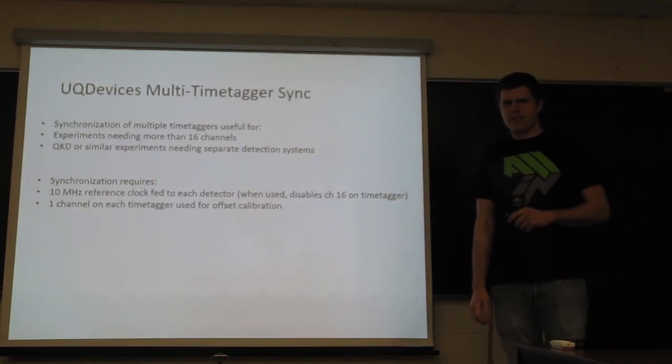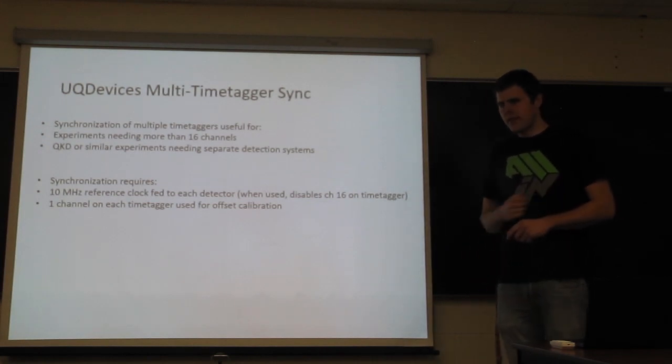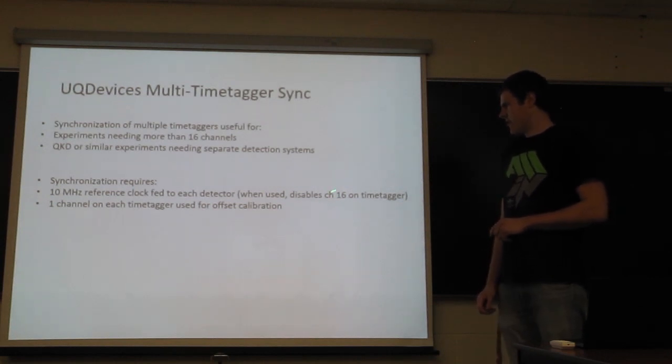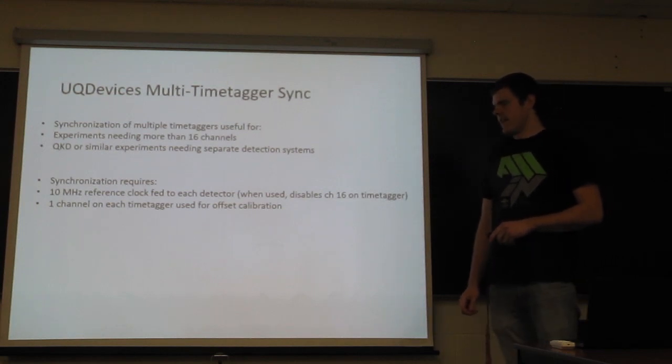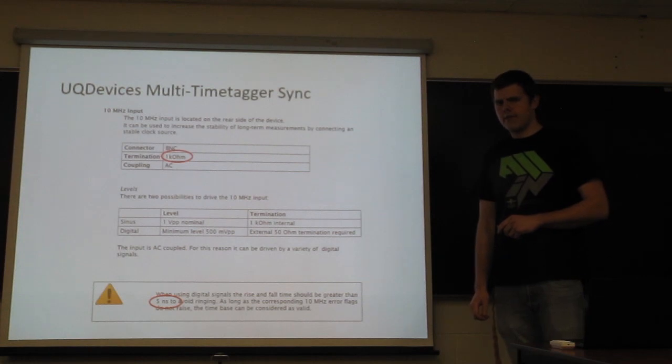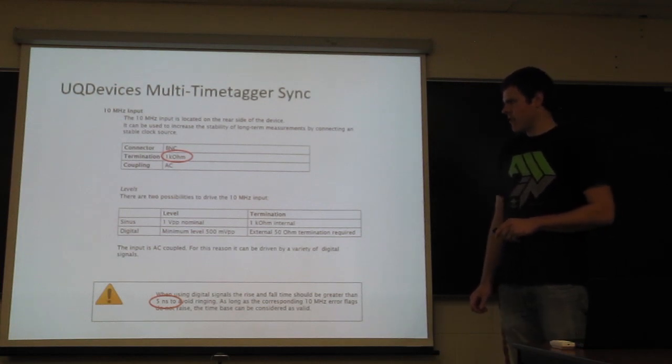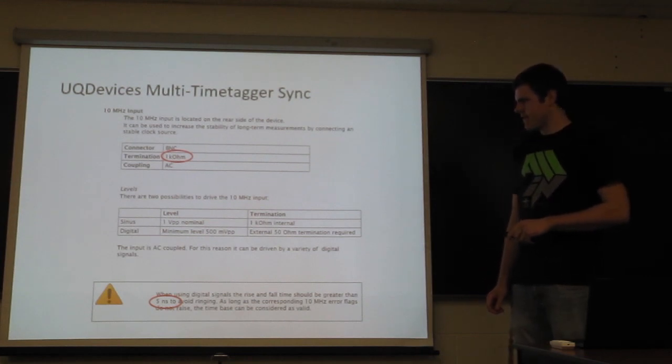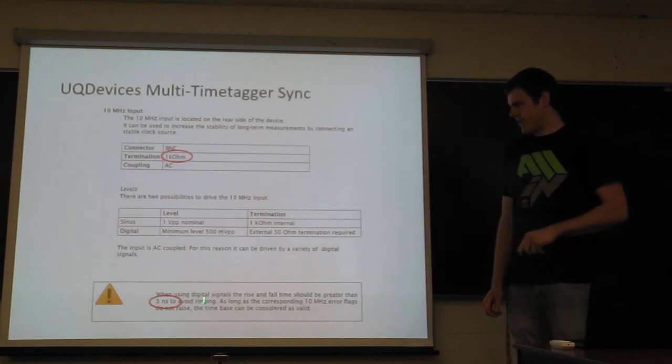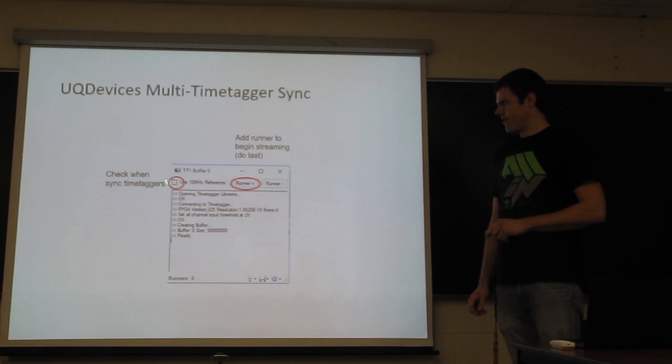Now, we're going to talk about synchronizing two time taggers. This is useful if you want to have a time tagger with more than 16 channels, and then also this can be used if you have two experiments where the detection systems need to be separate. So synchronization requires a 10 megahertz reference clock, which will end up using channel 16 on the time tagger. And then it also requires another channel to be reserved for an offset calibration. There are some things to keep in mind when you make this 10 megahertz reference clock. So keep in mind that the termination is one kilo ohm. There's a specification for what the voltage of the signal needs to be, and also the rise time cannot be too quick. So when you want to use a 10 megahertz reference, make sure you click this button before adding a run.